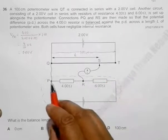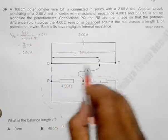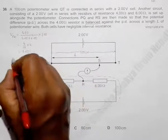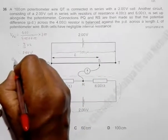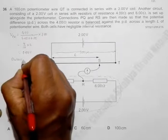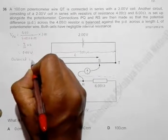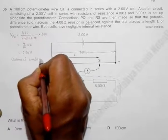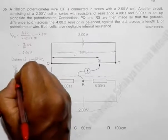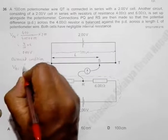It means it is only possible if this PD and this PD is same. So this means since it is a balanced condition, we must have VQS should be equal to...